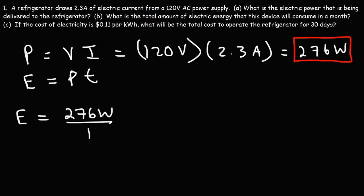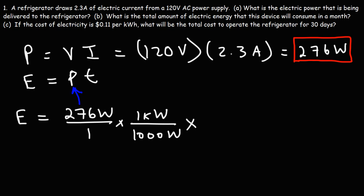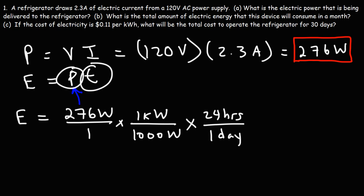When dealing with the cost of electricity, electric energy is typically reported in kilowatt hours, so we want to convert watts to kilowatts. One kilowatt is equal to a thousand watts — this is simply a conversion factor. This value is the P part in the equation. Now I'm going to use another conversion factor: there are 24 hours in a day. If you multiply the power in kilowatts by the time in hours you get the energy in kilowatt hours. The unit watts will cancel.